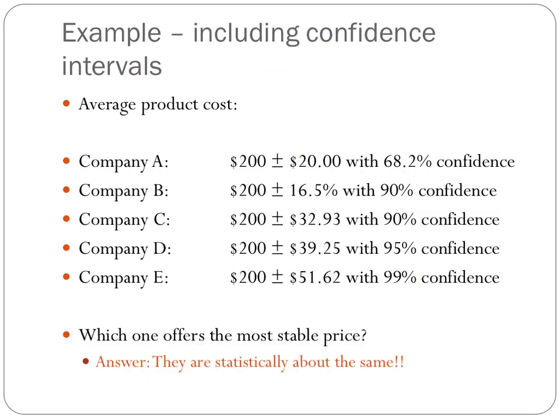As it turns out, all of these companies statistically offer about the same pricing structure. Even though the variability in pricing for company A is smaller than that of company E, company A is stating the uncertainty with lower confidence than company E. So the big takeaway is that when stating measurements and including uncertainties, we need three critical pieces of information: first, the mean value; second, a deviation value; and third, the confidence for which that deviation is true.